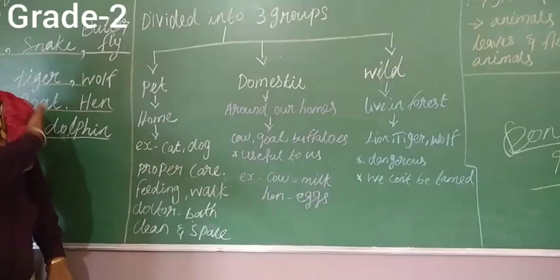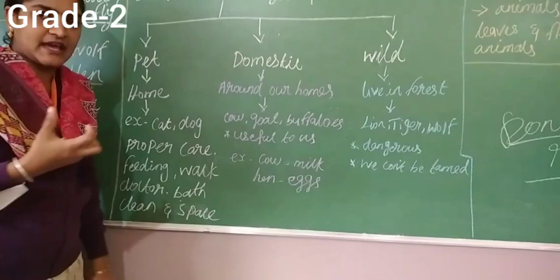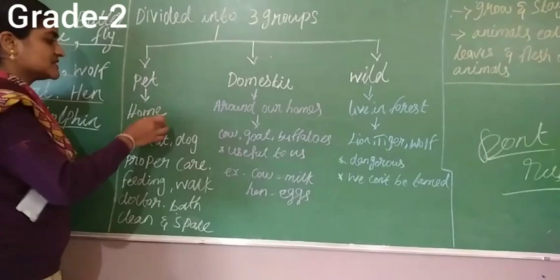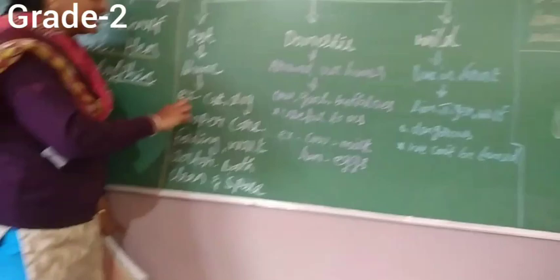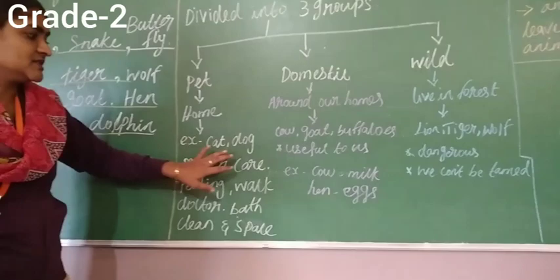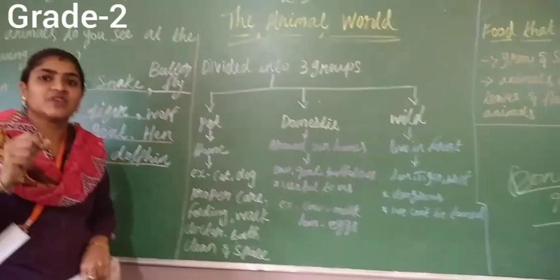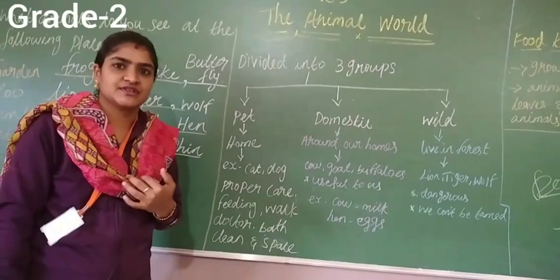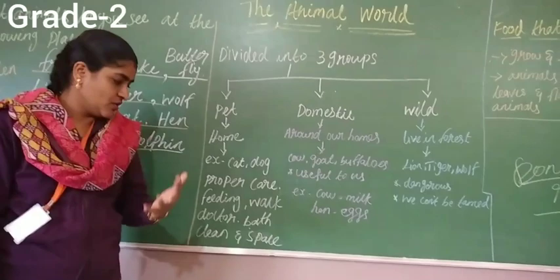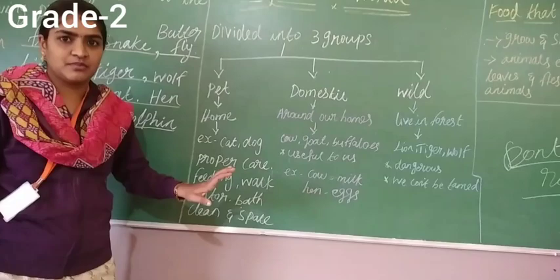What is meant by a pet animal? In our home, we keep some animals like a dog or a cat — those come under the category of pet animals. Animals we keep inside our house are called pet animals. Examples are dog, cat. For pet animals, we must take proper care: we have to bathe them every day, feed them, take them to the doctor regularly, and give them separate living space.